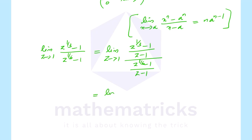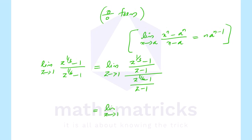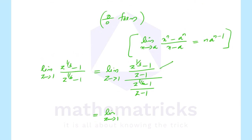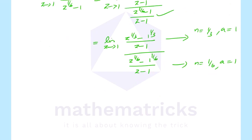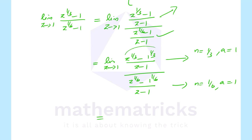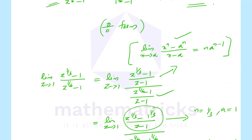That is equal to limit z tends to 1. Now we apply the standard result: limit x tends to a of x raise to n minus a raise to n divided by x minus a equals n into a raise to n minus 1. Here in the numerator, n is 1 by 3, and the position value is 1. That gives 1 by 3 into 1 raise to 1 by 3 minus 1.